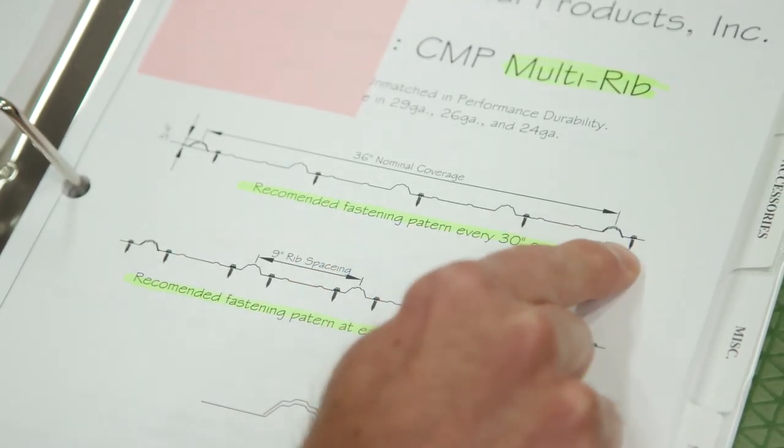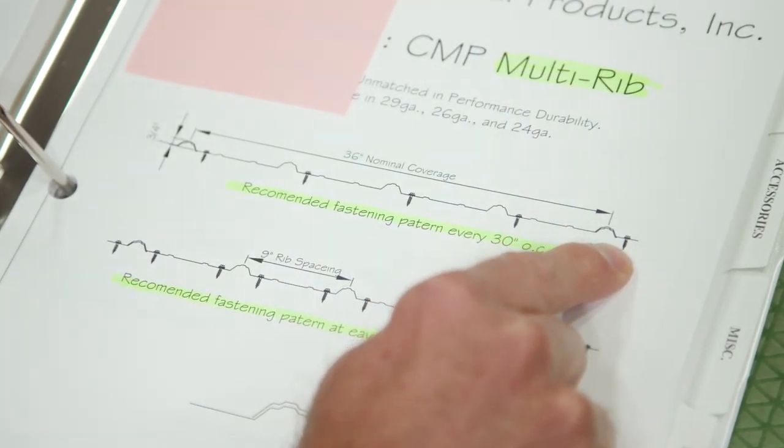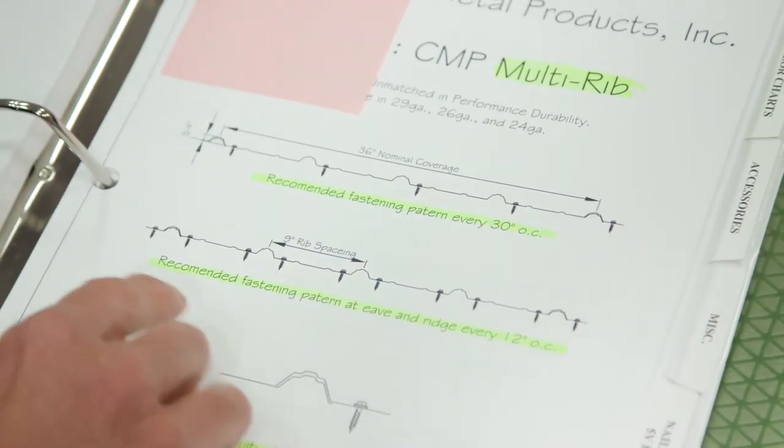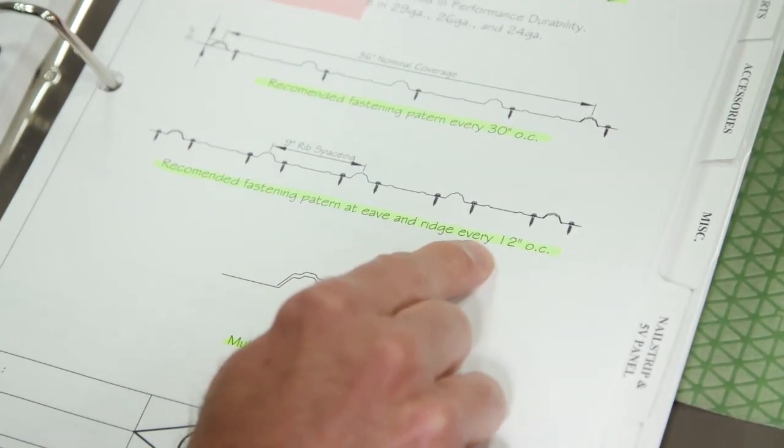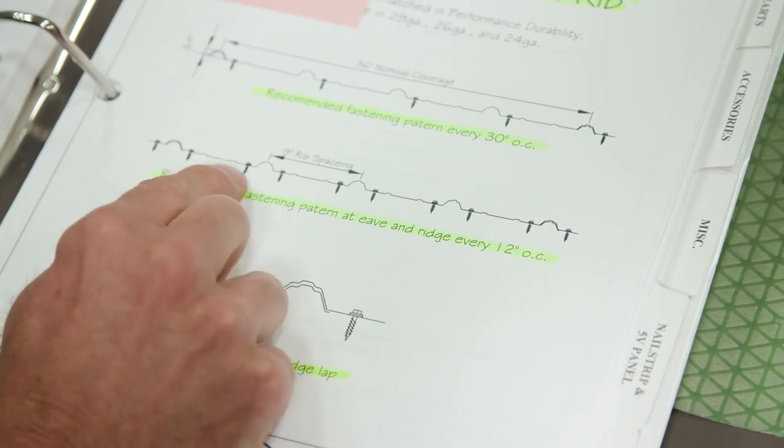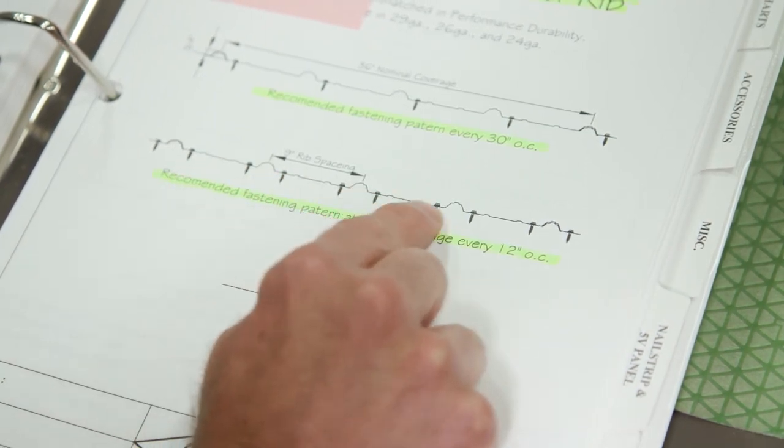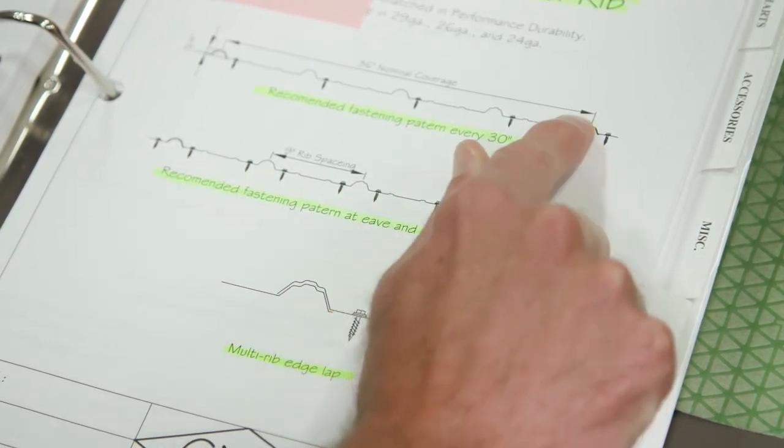Screw, screw, screw, screw, and screw. That's out in the interior. Right beside the panel. This is on the eaves and the ridge. It's right beside every panel. But once again, there are no screws in the top of the rib.